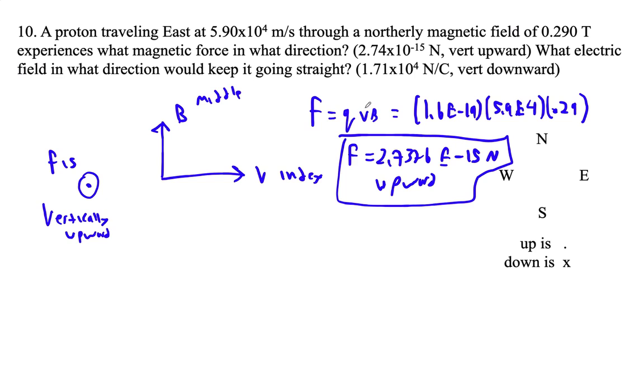So the electric field that would make it go straight would have to exert a downward force. So the electric field is going to be down. And then let's figure out the magnitude of it. Let's just set this up because this is really kind of cool.